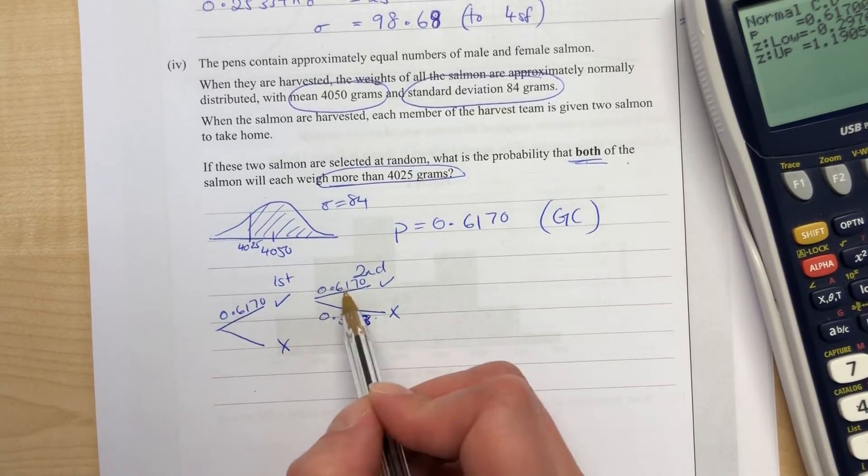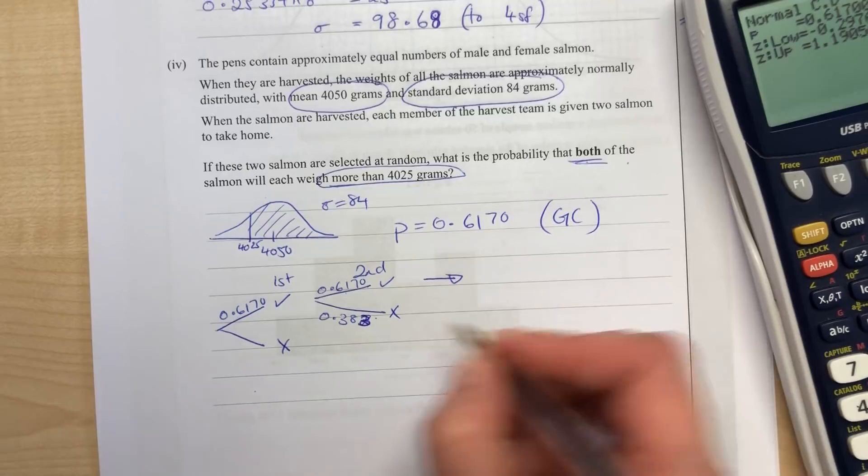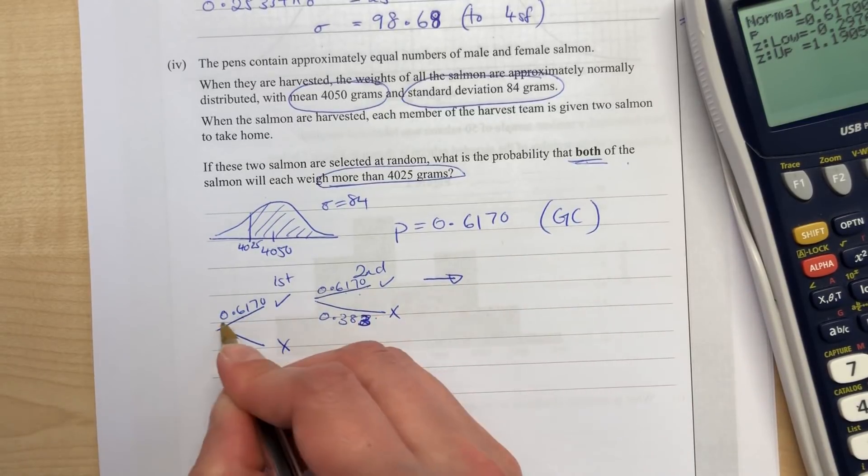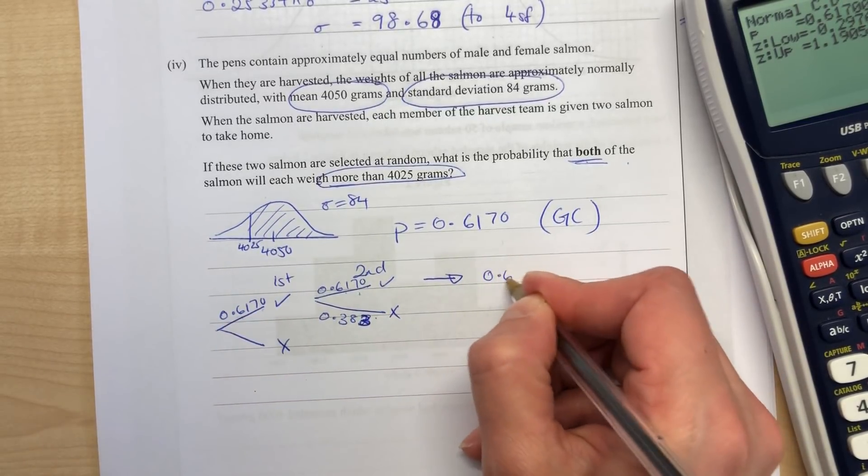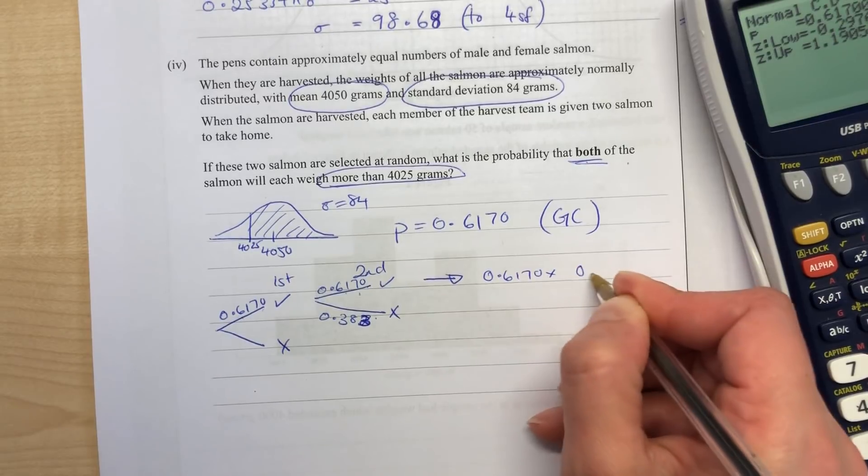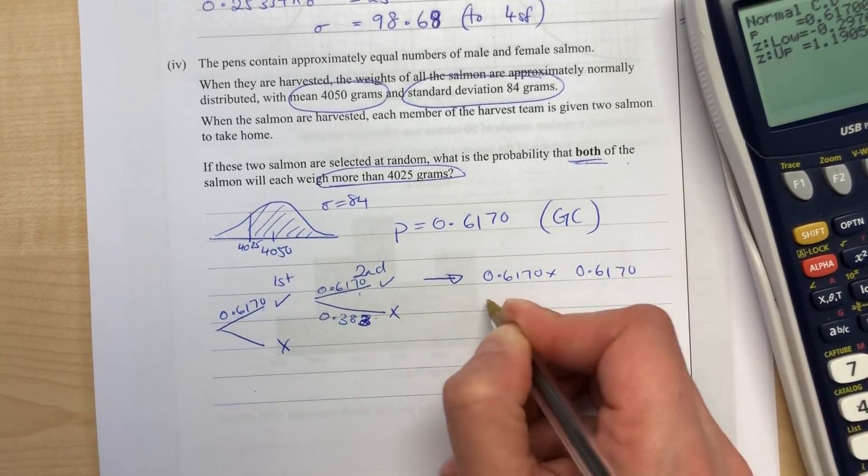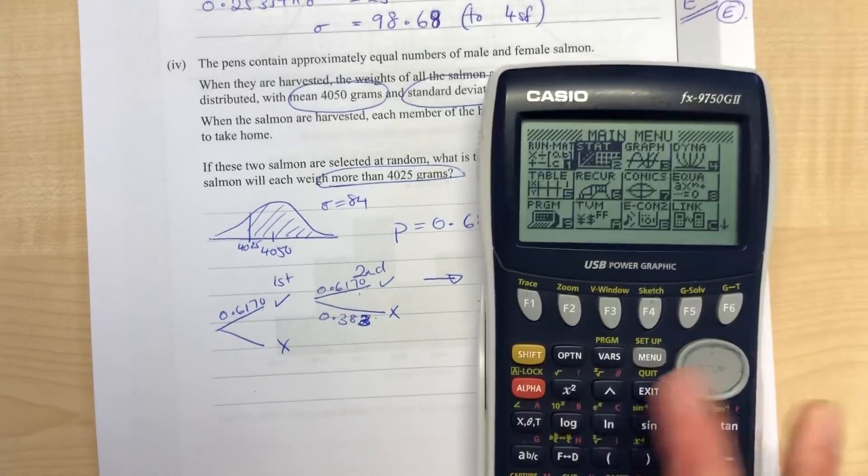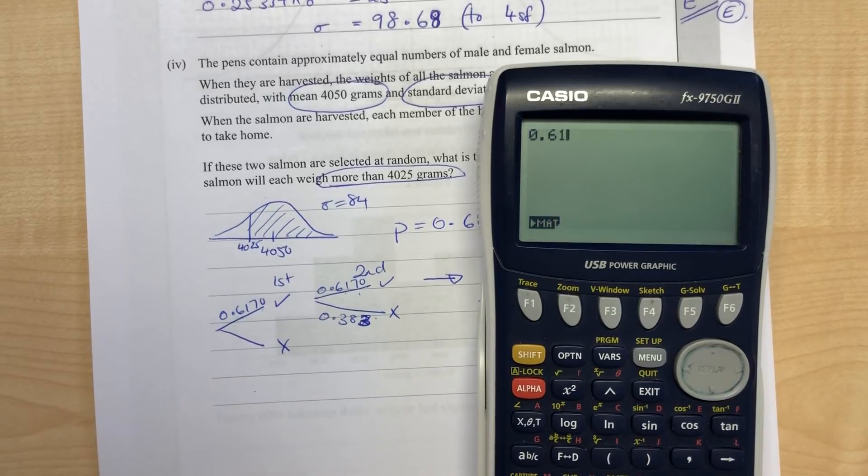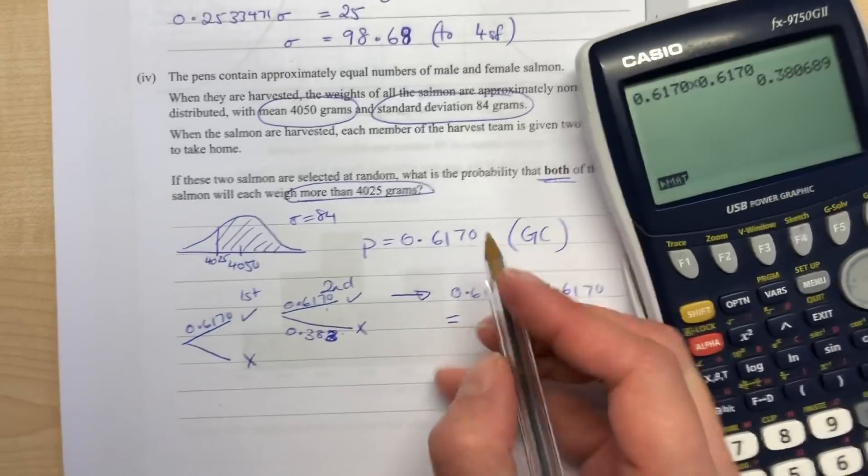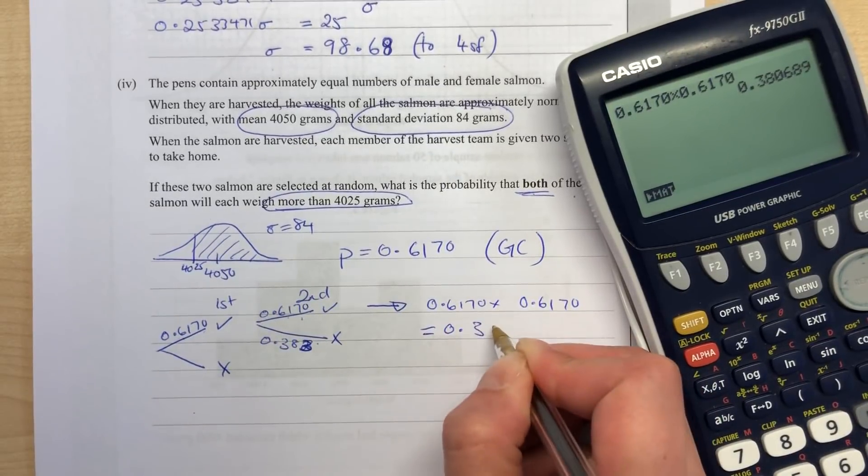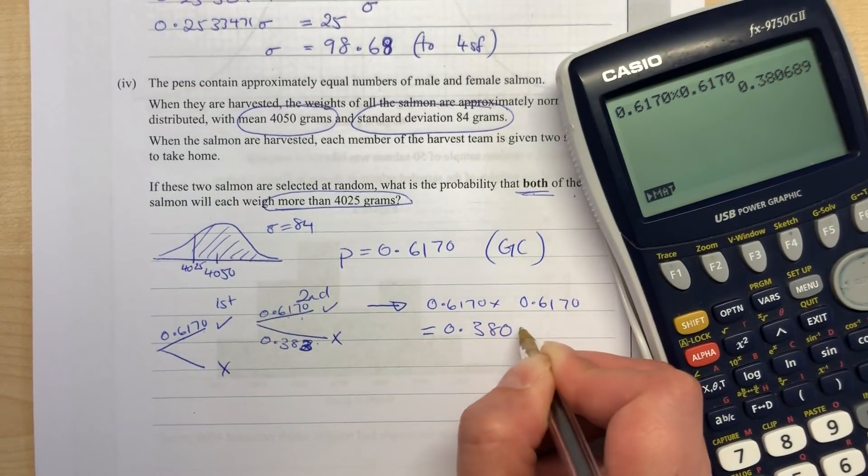We don't need that. We want this branch here where both of the fish are over, so we would multiply those branches. It's 0.6170 times 0.6170, which gives us 0.3807.